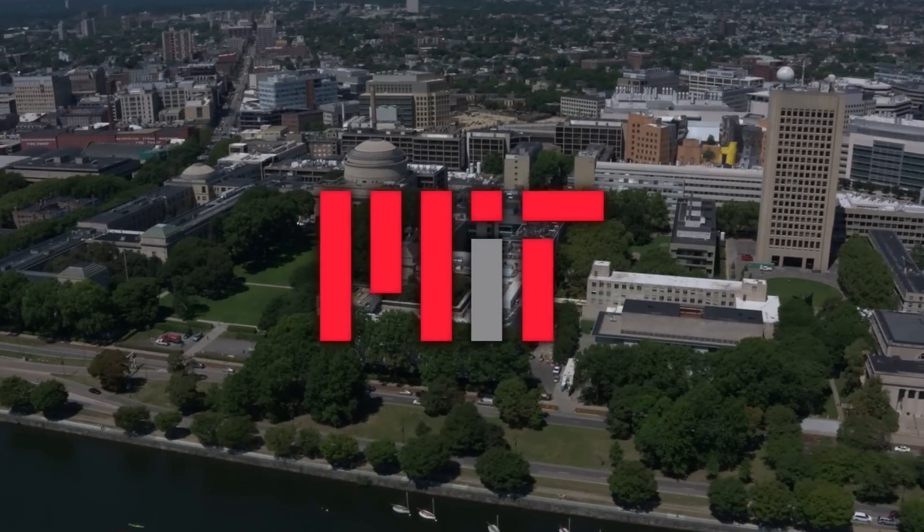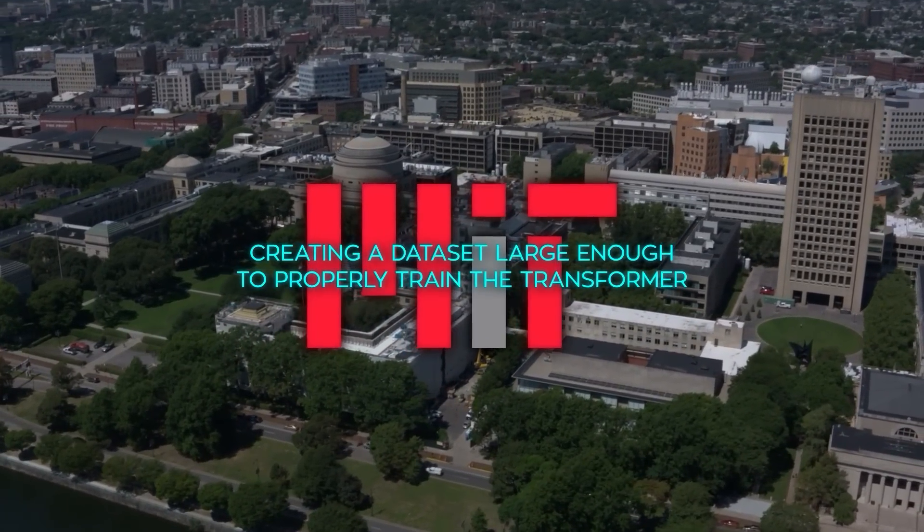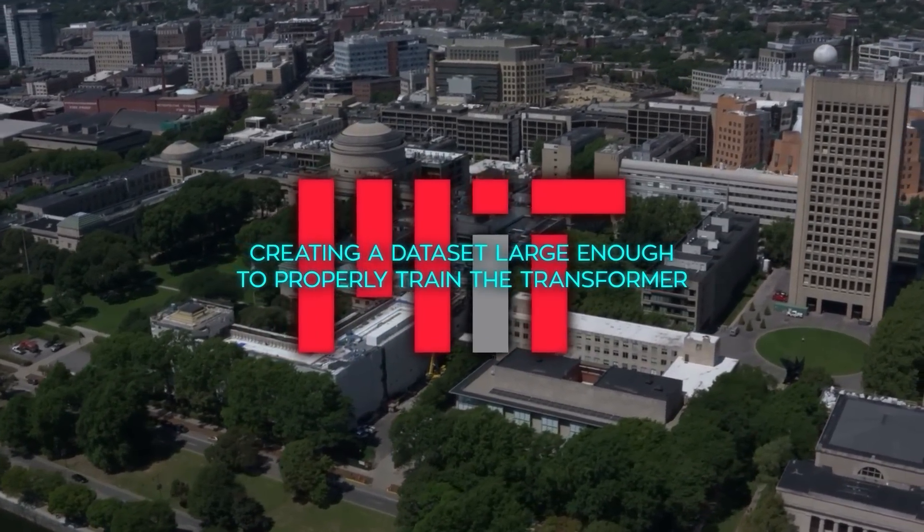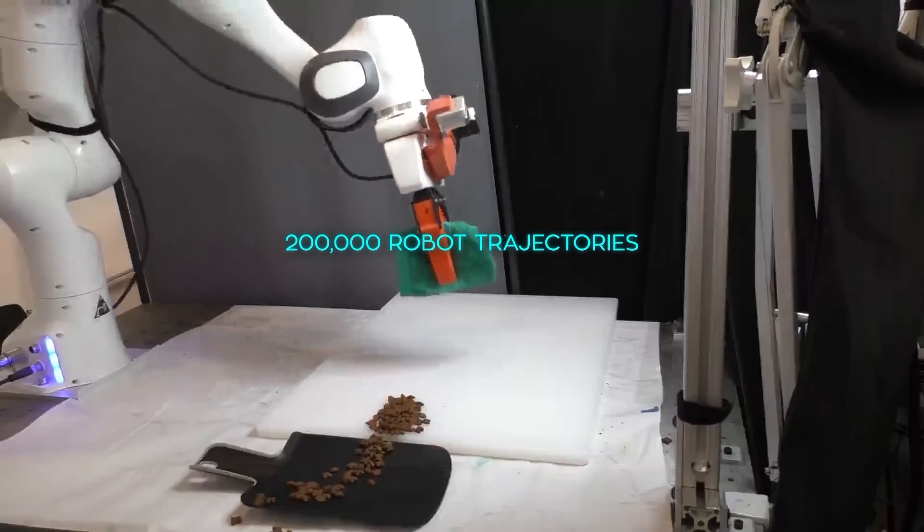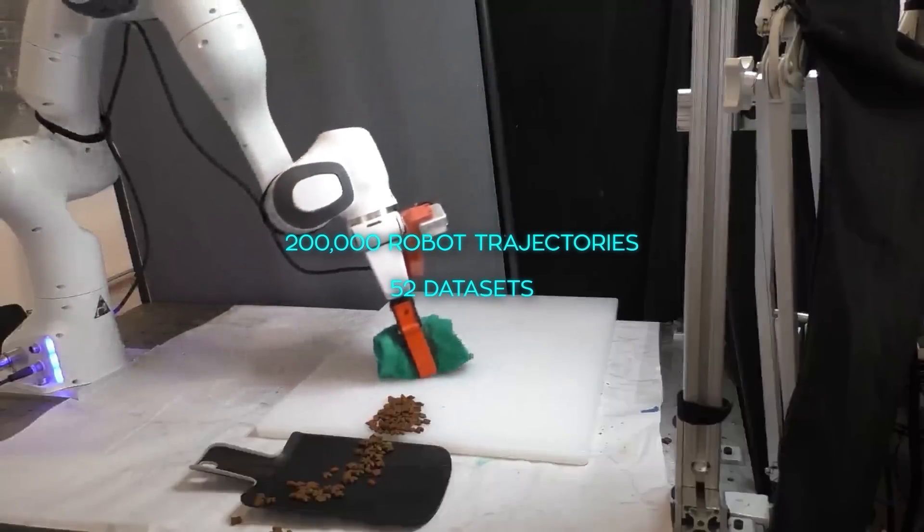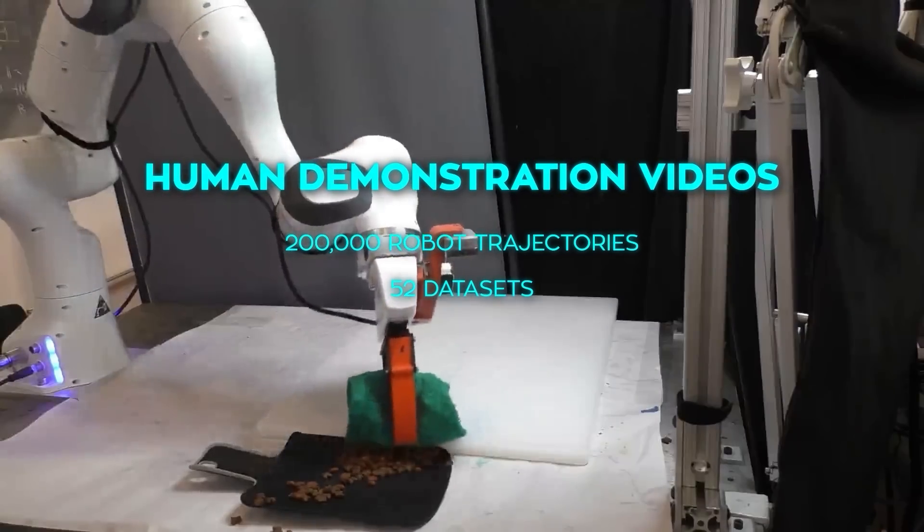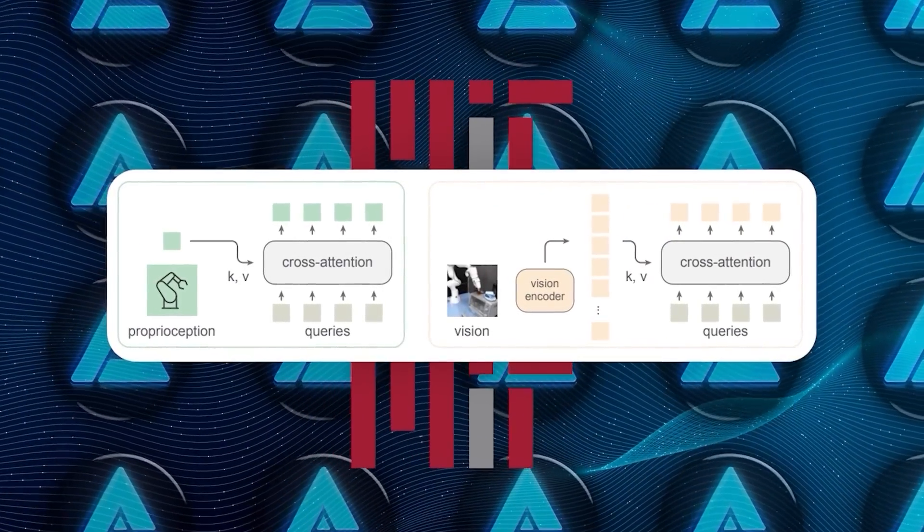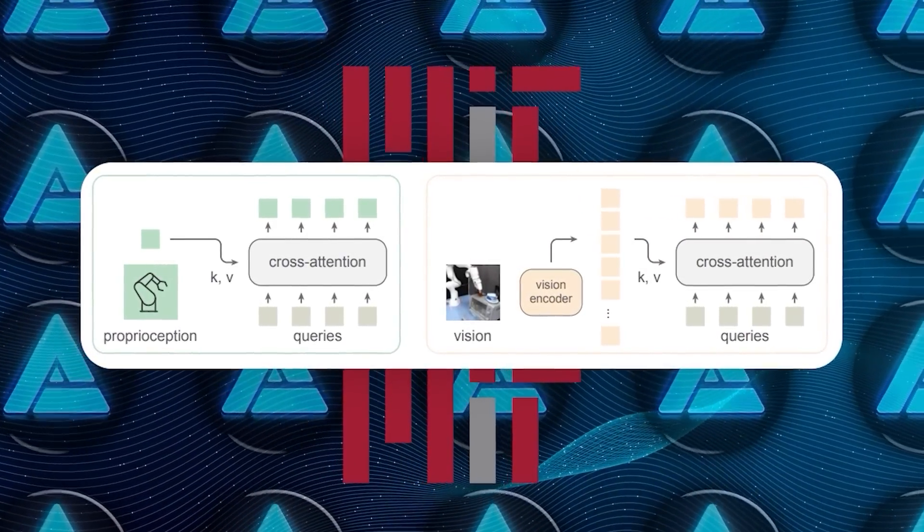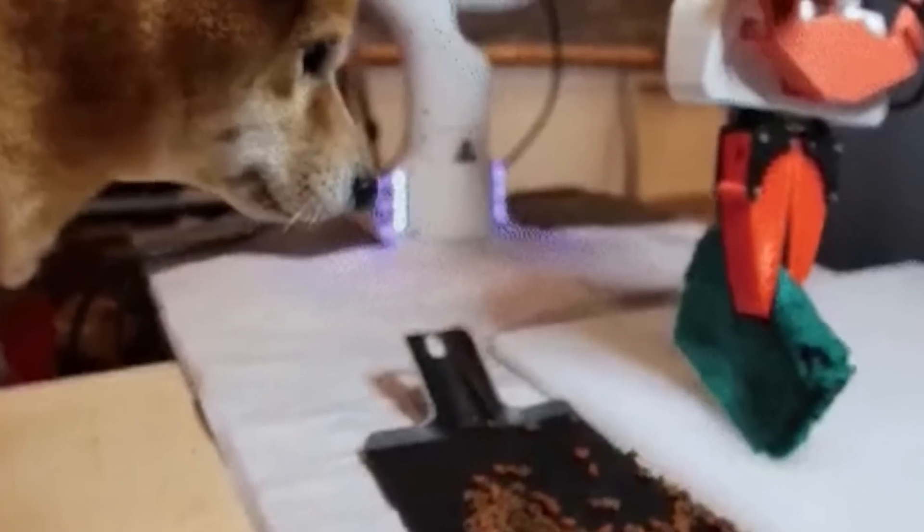One of the biggest challenges with HPT was creating a dataset large enough to properly train the transformer. And when I say large, I mean massive. Over 200,000 robot trajectories across 52 datasets, including human demonstration videos and simulations. This was a big step because typical training data in robotics is often focused on a single task or specific robot setup. Here, they're bringing it all together into a much broader learning model.